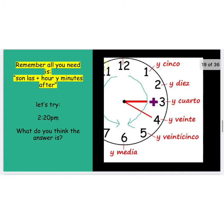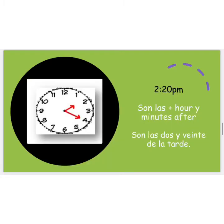Let us try 2:20 PM, or 20 minutes past 2. What do you think the answer is? You're going to put son las, then the hour you're talking about, then E followed by the number of minutes after the hour. The answer would be son las dos y veinte de la tarde. Remember, to state the minutes after the hour, all you need is son las followed by the hour, followed by E and the number of minutes after. We're talking about 2:20 — 20 minutes after 2.